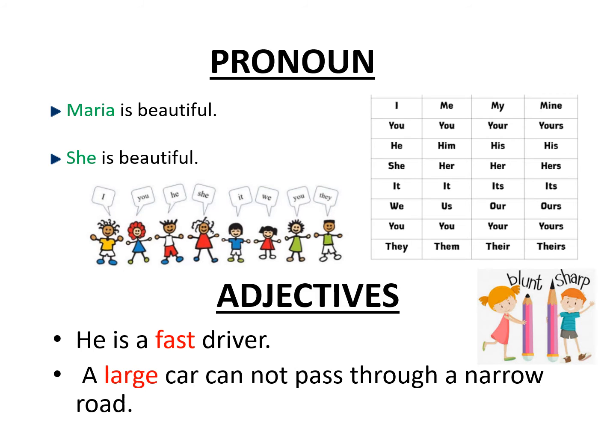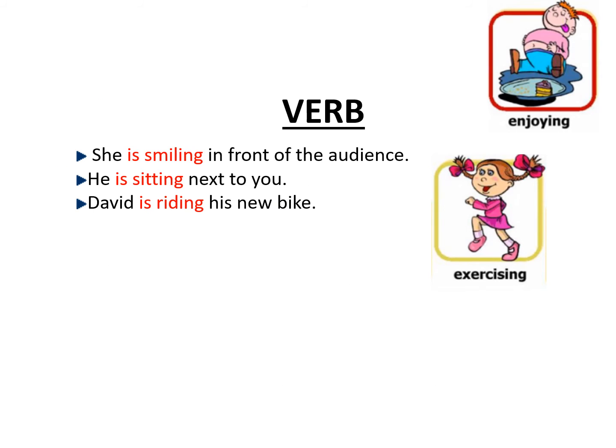Next are adjectives. Describing words are called adjectives. Words which are used to describe nouns are adjectives. For example, 'He is a fast driver.' Driver is a noun here. What kind of driver is he? He is a fast driver. So 'fast' is an adjective here. Next are verbs. Action words are called verbs — whatever someone is doing is a verb. For example, 'She is smiling in front of the audience.' What is she doing? She is smiling — 'is smiling' is a verb. David is riding his new bike — 'is riding' is a verb here.